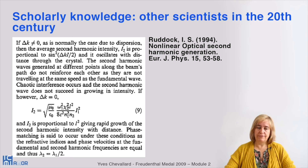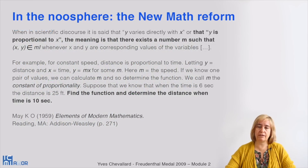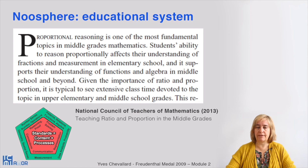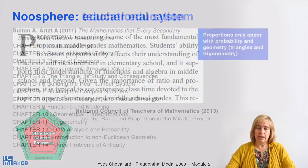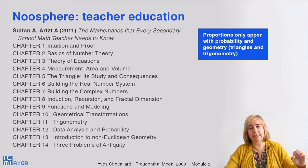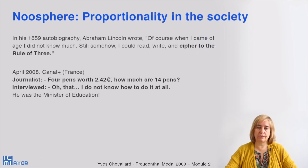Here is a piece of evidence from the scholarly knowledge of other scientists in the 20th and 21st centuries, with the use of proportional relationships. Here is evidence of the new math reforms and the new status provided to proportionality, which is almost marginal. Then, today in the educational system, proportionality appears as proportional reasoning and is considered one of the most fundamental topics in middle-grade mathematics — yet in a book on teacher education called 'The Mathematics that Every Secondary School Mathematics Teacher Needs to Know,' it does not appear as a central chapter. Finally, two episodes of proportionality in society are left for you to discover.